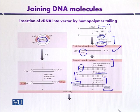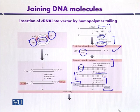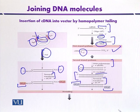This pBR322 vector has two selectable markers for antibiotics: one is tetracycline resistance and the second is ampicillin resistance, so that it can select transformants when grown on a medium supplemented with these two antibiotics. Suppose it has one restriction site for PstI — it can be digested with PstI so that we can get 3' single-stranded overhangs. These can be treated with terminal transferase, but only in the presence of a single type of nucleotide, which here is guanine residues that are complementary with the cytosine of the cDNA.